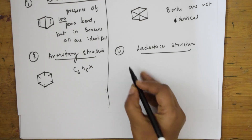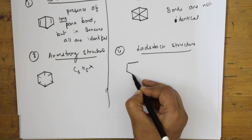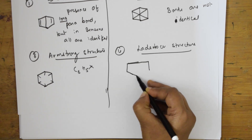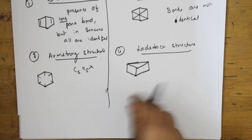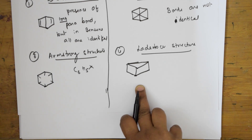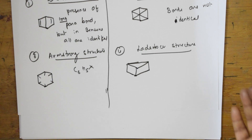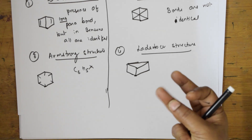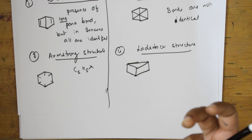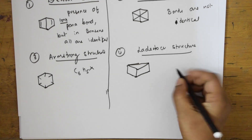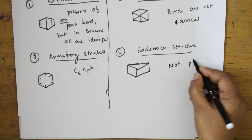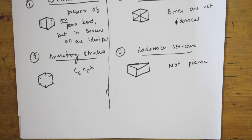When we come to Ladenburg structure, it looks like a different arrangement. Benzene has a planar hexagonal cyclic structure — those three words: planar, hexagonal, cyclic structure — these are the characteristic features of benzene. But the Ladenburg structure is not in one plane, so it is not planar. Hence, this was also rejected — not planar, hence rejected.